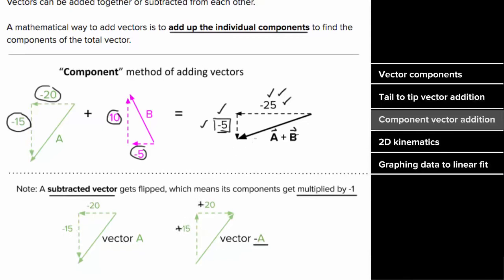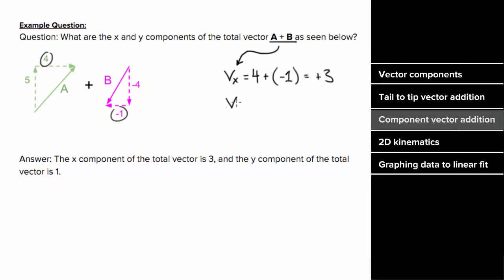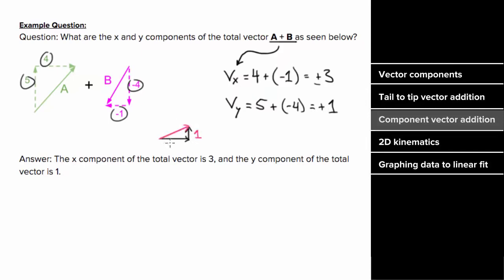So what would an example of vector component addition look like? Let's say you had vectors a and b with these components and you wanted to know the components of the total vector a plus b. To find the horizontal component, I add the horizontal component of a, which is four, plus the horizontal component of b, which is negative one, giving a total horizontal component of positive three. And for the vertical component, I add five plus negative four to get positive one. So since the horizontal component is positive, the total vector points three units to the right, and since the vertical component is positive, it points one unit up — meaning the total vector a plus b points up and to the right: one unit up and three units to the right.